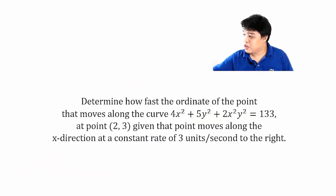Let us apply this technique to some calculus problems. This technique is very useful for problems regarding related rates, where there are two variables that change with time. For example: determine how fast the ordinate of a point moves along the curve 4x² + 5y² + 2x²y² = 133 at the point (2, 3), given that the point moves along the x-direction at a constant rate of 3 units per second to the right.